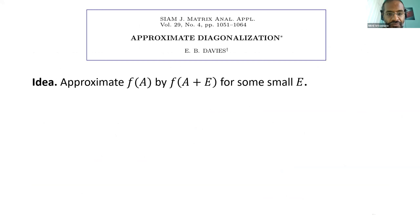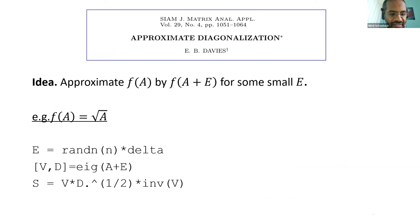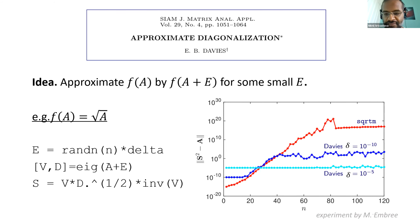This led Davies to write a paper with the idea: if you want to compute matrix functions of non-normal matrices, instead of applying the function directly, find a nice perturbation E that slightly changes the matrix but greatly regularizes the eigenvectors. He even wrote code to compute the square root: first add a small random perturbation, then diagonalize the perturbed matrix, then take the square root of the diagonal. This actually beats MATLAB — the standard sqrtm function produces garbage after around 40-by-40 matrices, but this regularization approach works for much larger matrices.